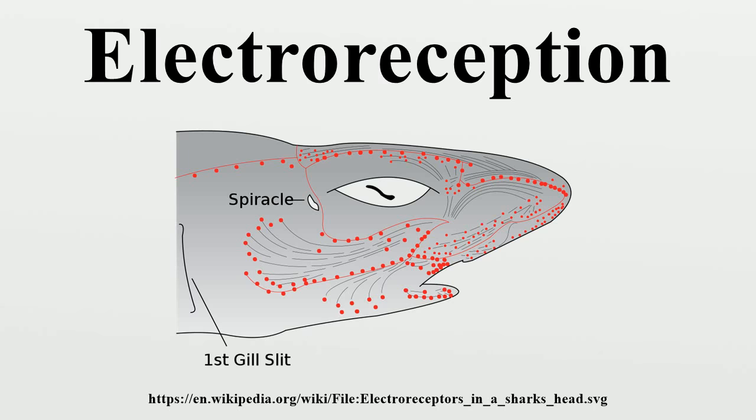In sharks, sensing an electric dipole alone is sufficient to cause them to try to eat it. Weakly electric fish can also communicate by modulating the electrical waveform they generate, an ability known as electrocommunication.